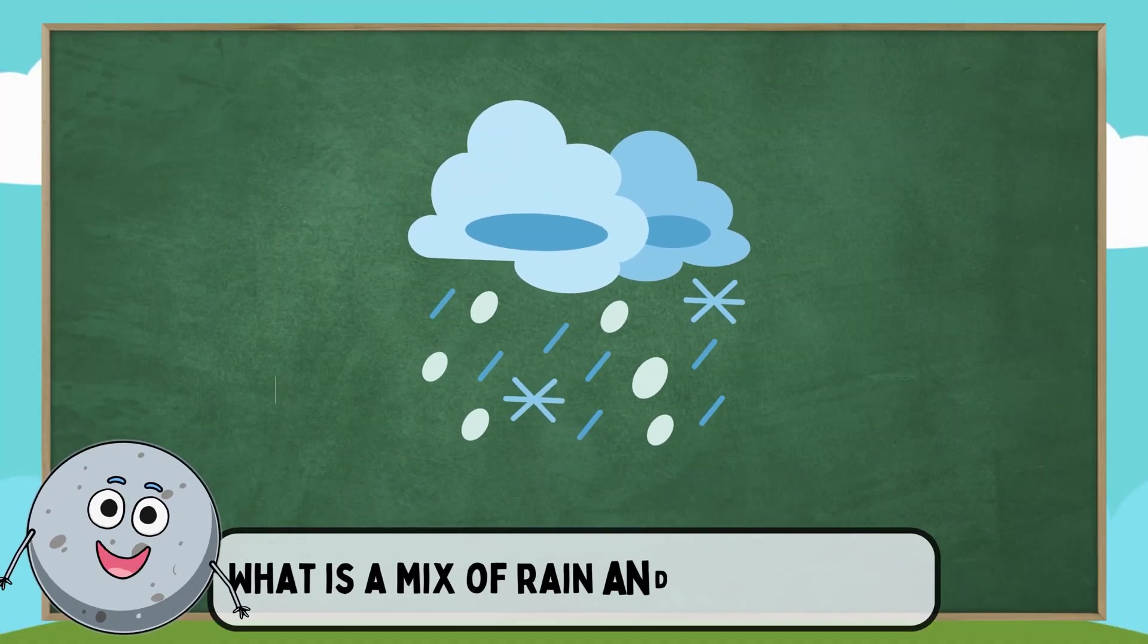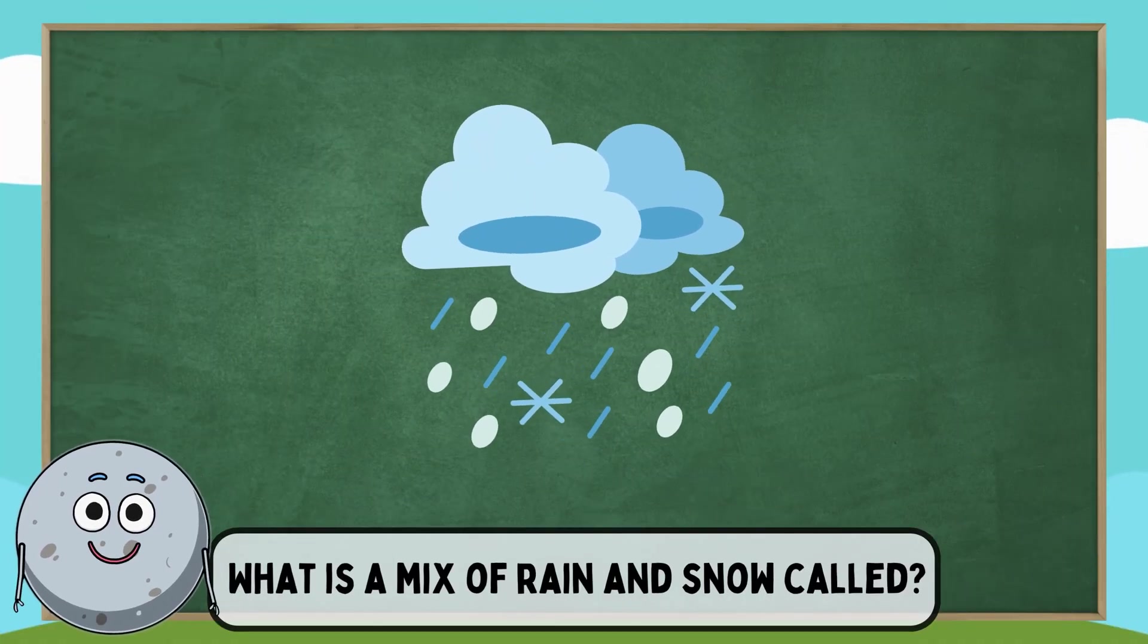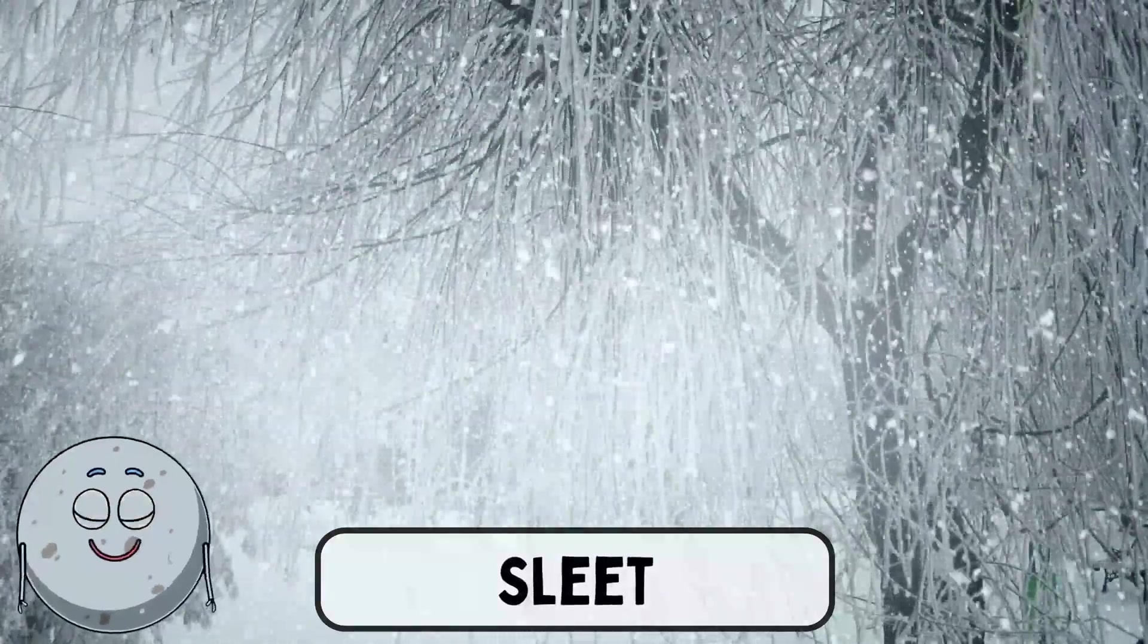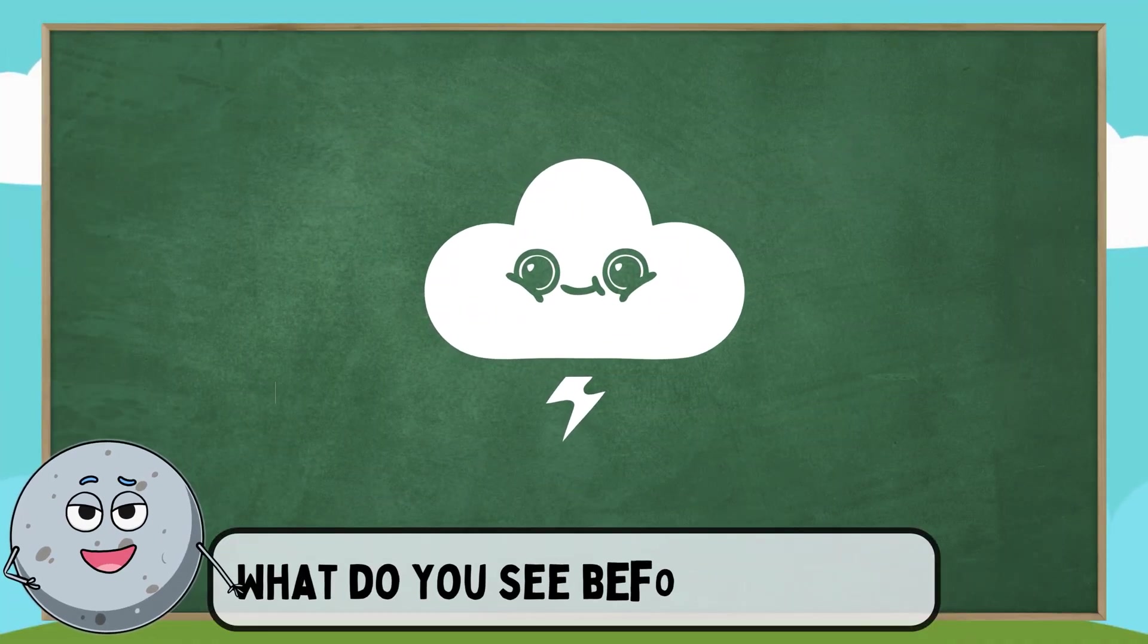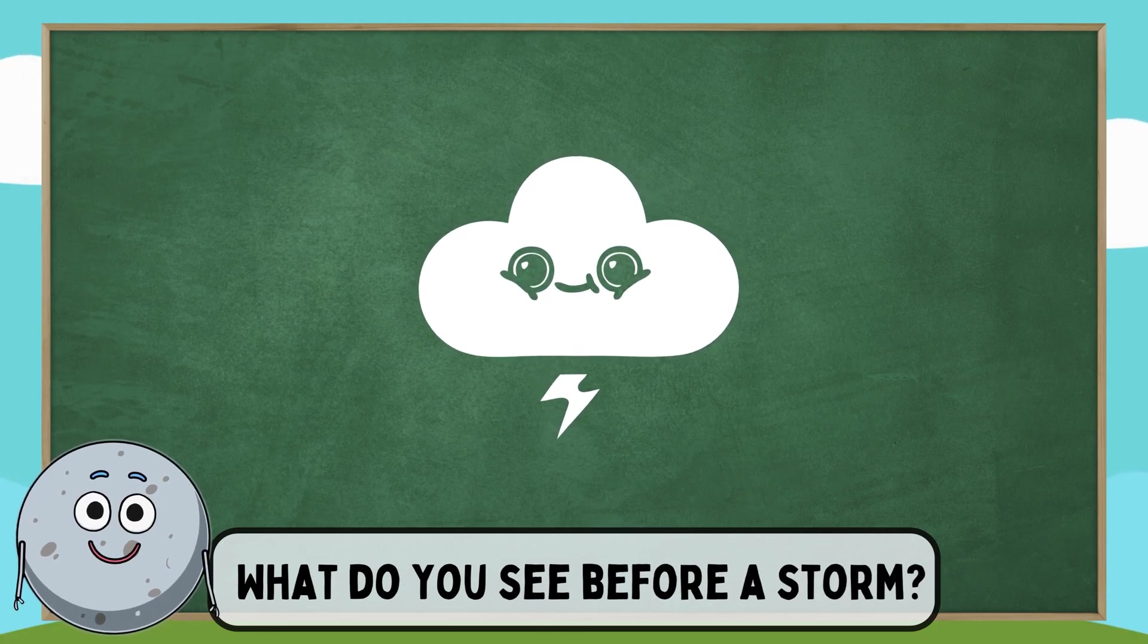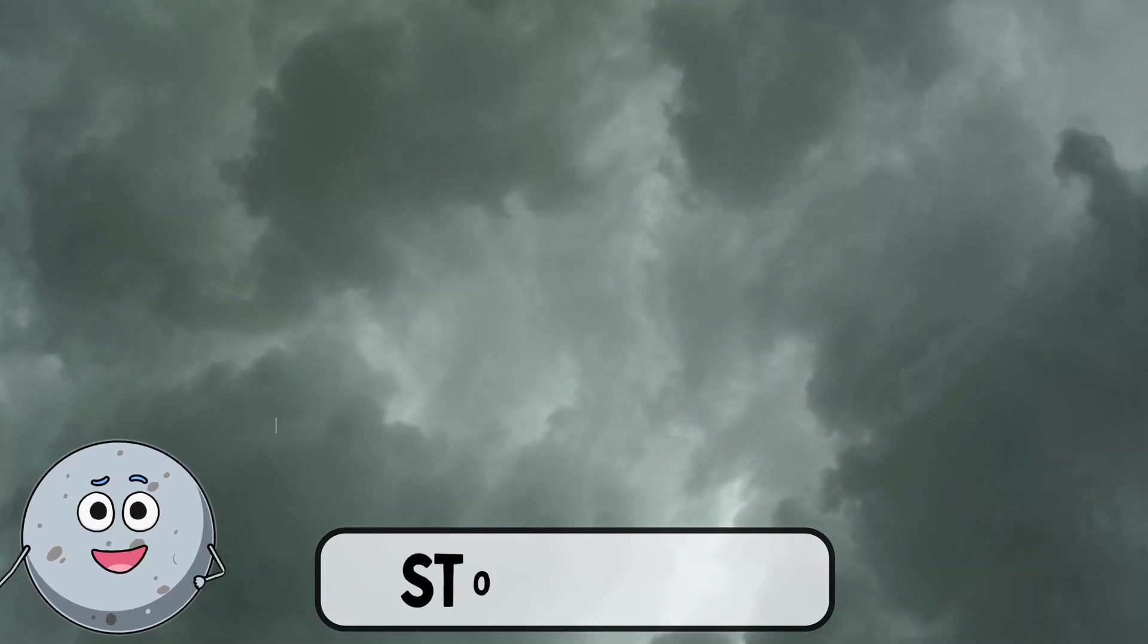What is a mix of rain and snow called? It's called sleet. What do you see before a storm? I see a storm cloud.